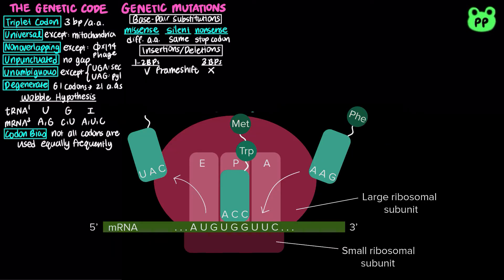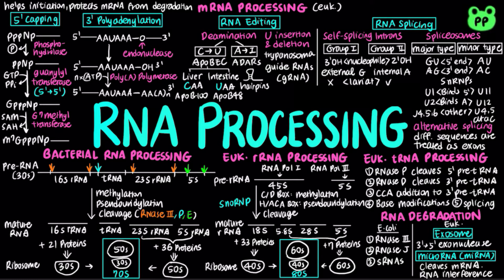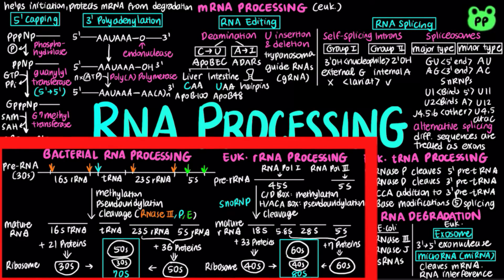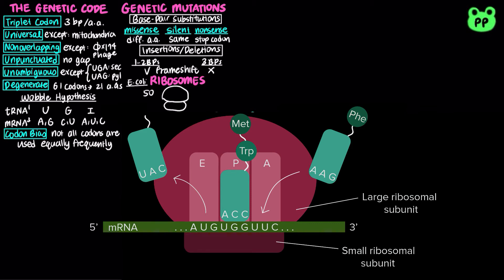The two key components that facilitate protein synthesis are ribosomes and transfer RNA. Ribosomes are macromolecular machines consisting of ribosomal RNA (rRNA) and associated proteins that function to synthesize proteins. The 70S bacterial ribosome is made of a 50S large subunit and a 30S small subunit, whereas the eukaryotic 80S ribosome is made of a 60S large subunit and a 40S small subunit. Both ribosomes consist of three sites.